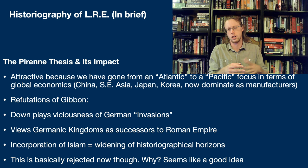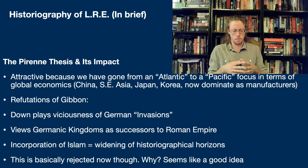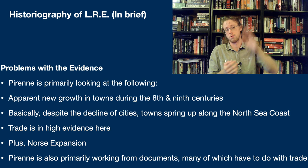The Pirenne thesis was a refutation of Gibbon. It downplayed the viciousness of the Germanic invasions and rather than viewing the Germans as the people who killed off the Roman Empire, it viewed them as the successors to it, with the incorporation of Islam being what really creates medieval Europe. But as attractive as this is, it is basically rejected — because there are problems with the evidence. Since about the 1970s, the archaeology for this period has taken off, and we have more sites from the late antique and early medieval period than we did before.